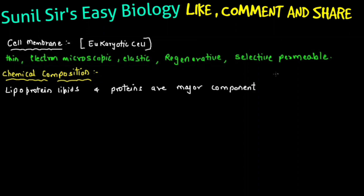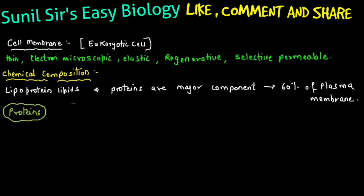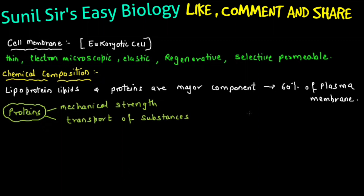This percentage can be asked in your NEET exam. 60% of the plasma membrane is made up of proteins. The proteins found in the cell membrane provide mechanical strength to the cell membrane. At the same time, they help in transportation of substances in and out of the cell — like tunnel protein, which plays a very important role.